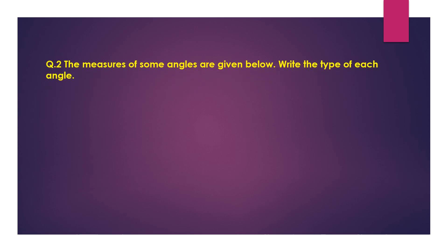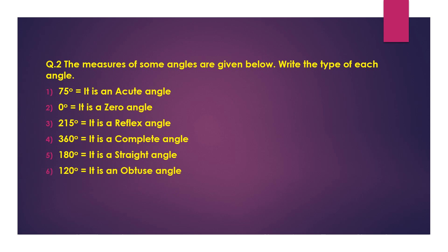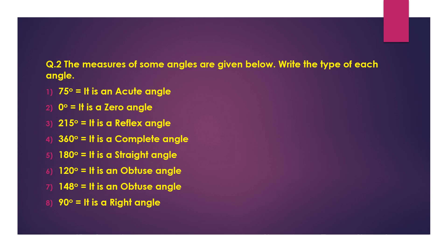Question 2: The measures of some angles are given below. Write the type of each angle. 1. 75 degrees — it is an acute angle. 2. 0 degrees — it is a zero angle. 3. 215 degrees — it is a reflex angle. 4. 360 degrees — it is a complete angle. 5. 180 degrees — it is a straight angle. 6. 120 degrees — it is an obtuse angle. 7. 148 degrees — it is an obtuse angle. 8. 90 degrees — it is a right angle.